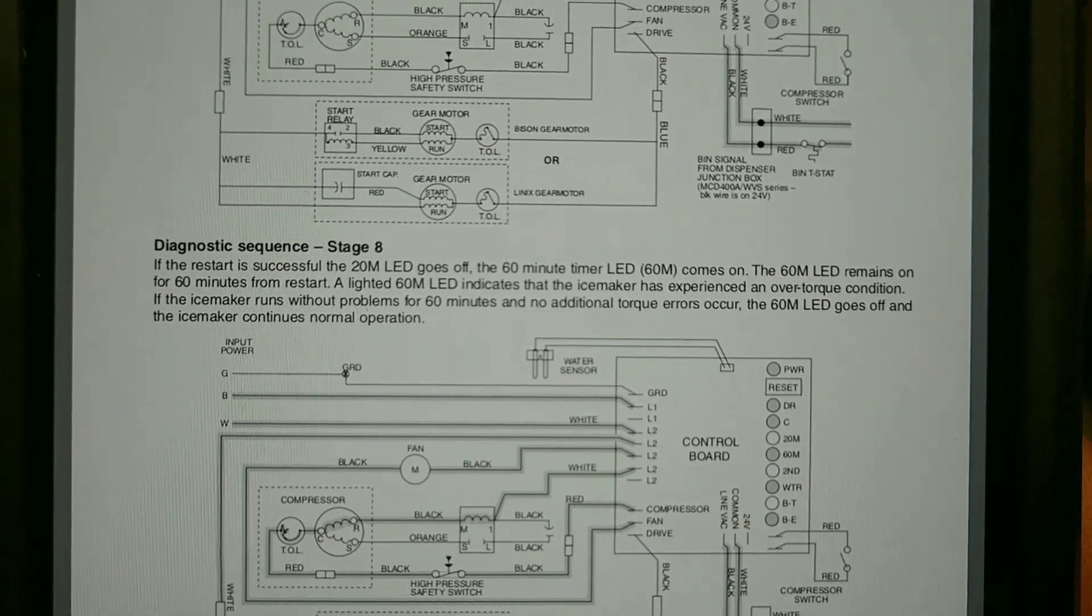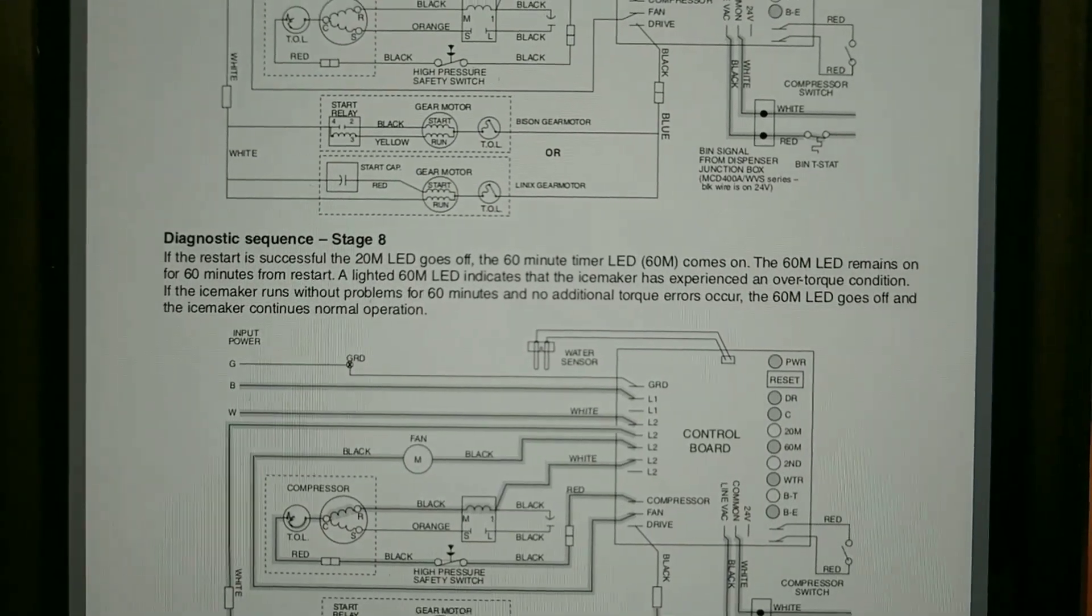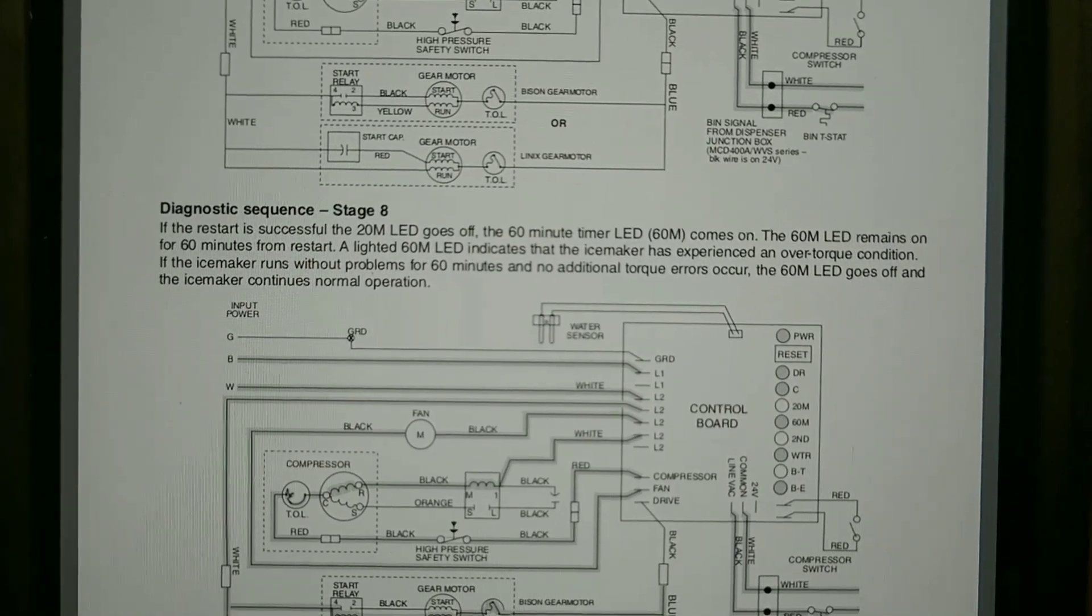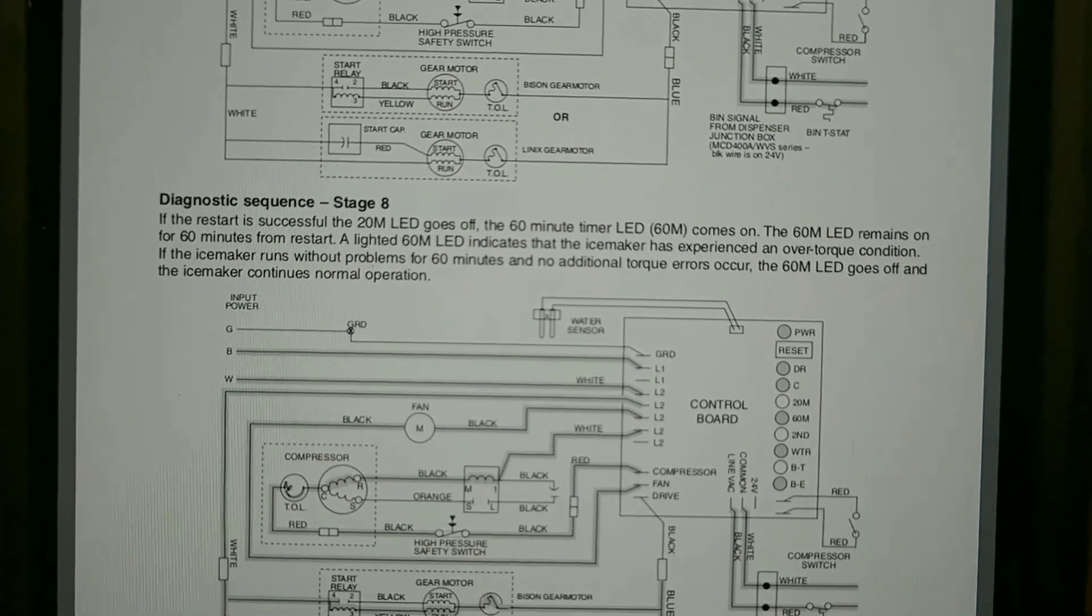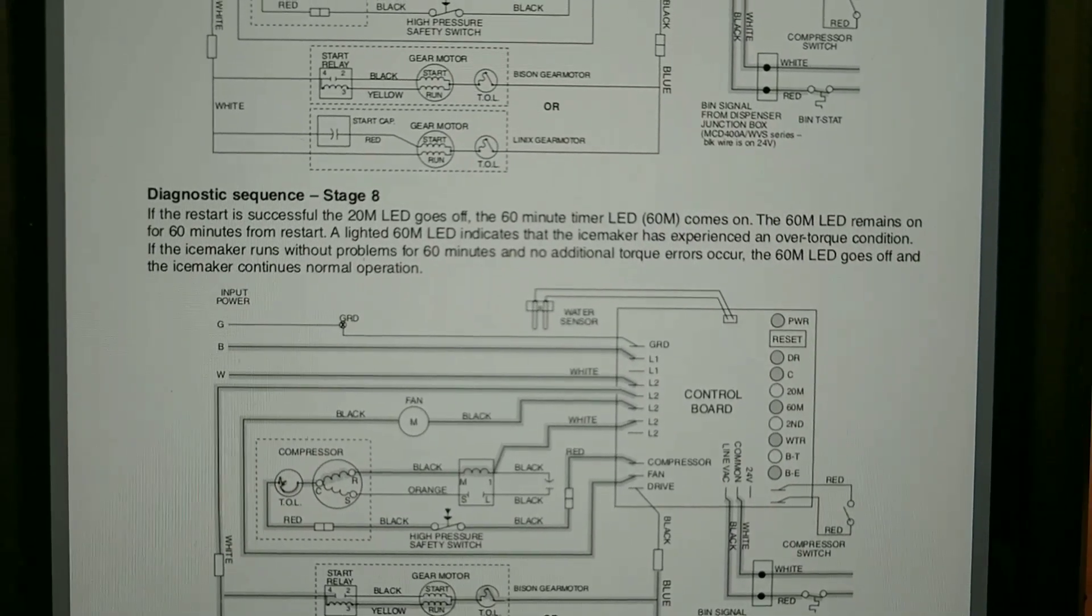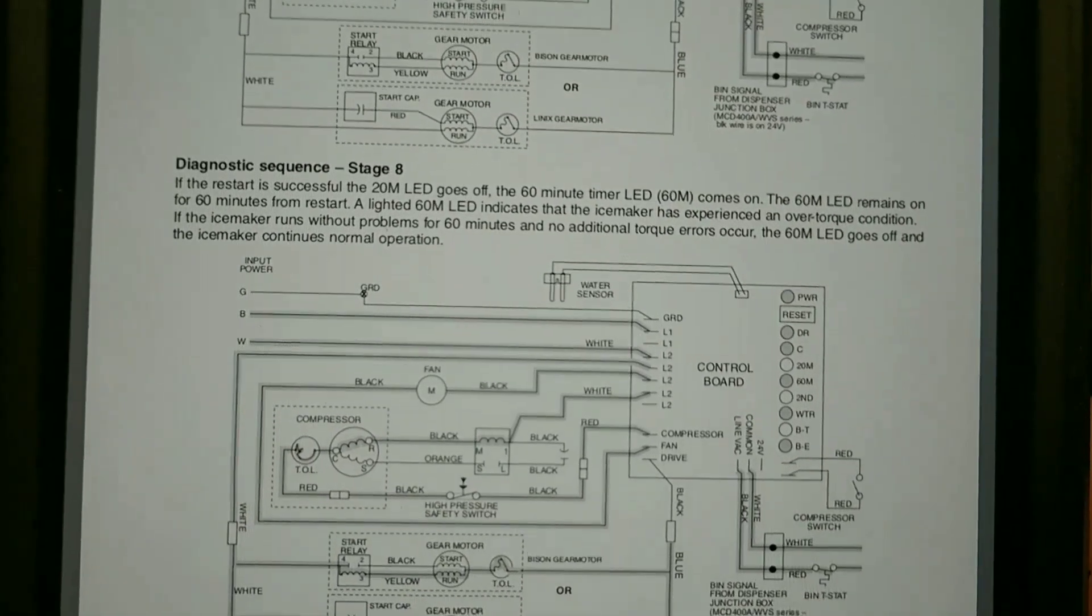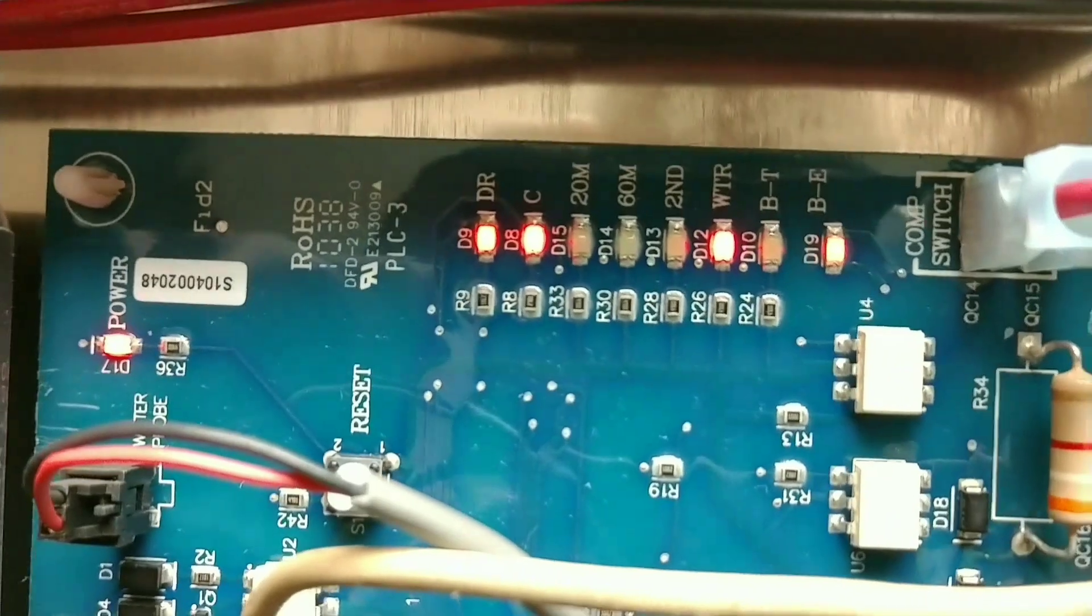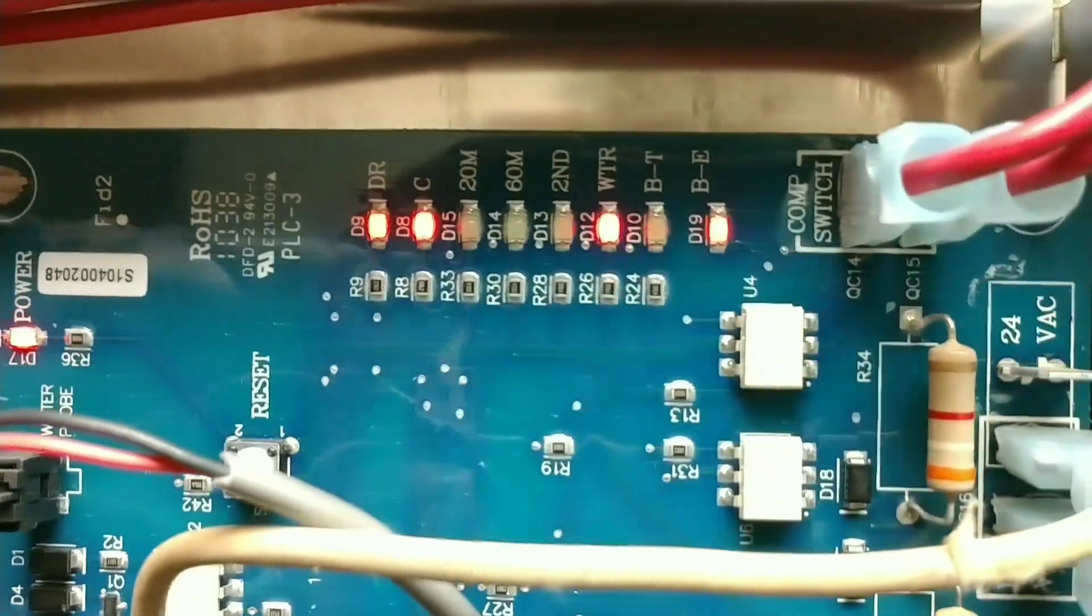The 60m LED remains on for 60 minutes from restart. A lighted 60m LED indicates that the ice maker has experienced an over torque condition. If the ice maker runs without problems for 60 minutes and no additional torque error occurs, the 60m LED goes off and the ice maker continues normal operation.